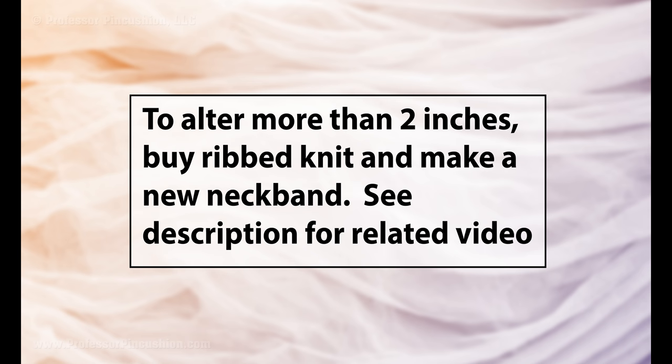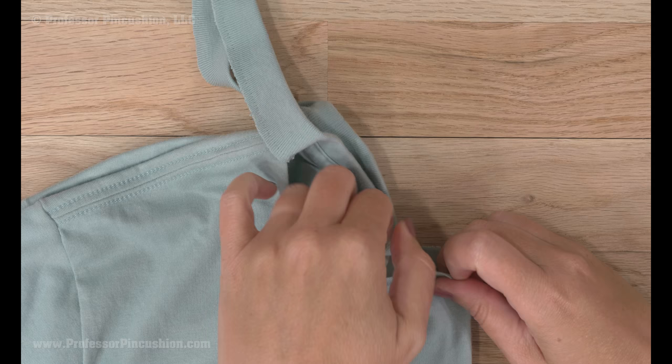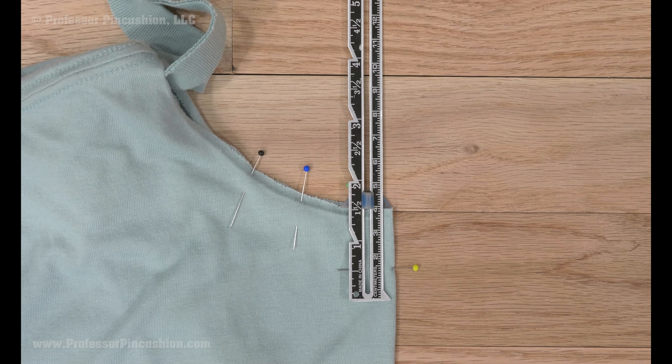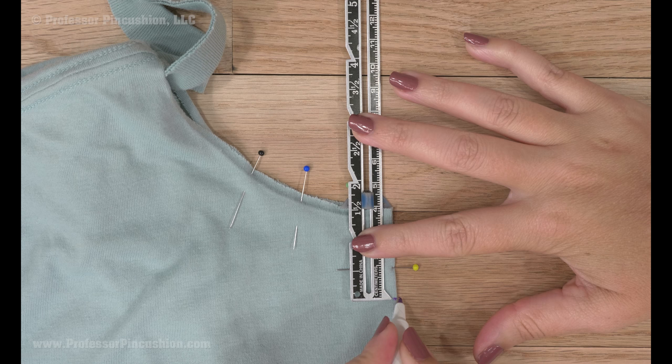With the shirt still right side out, fold it in half. I tuck the shirt back out of the way and throw in a few straight pins to hold the fold in place. Use a ruler to mark down from the neckline along the center fold your desired amount. Try to stick between one to two inches and make a mark.